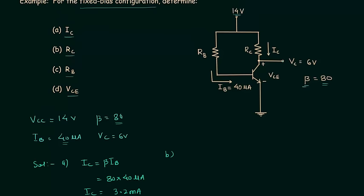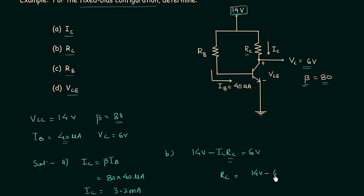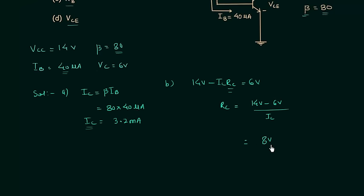For part B, I will use Kirchhoff's voltage law in the output loop to obtain the value of resistance Rc. Starting from 14 volts and ending at 6 volts: 14 volts minus Ic·Rc equals 6 volts. So Rc equals (14 minus 6) divided by Ic, which is 8 volts divided by 3.2 milliamps, giving Rc equal to 2.5 kilo-ohms.